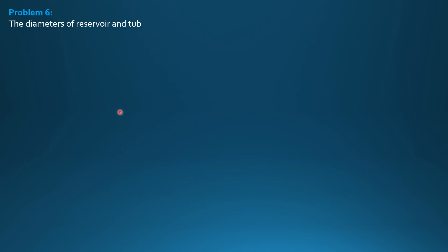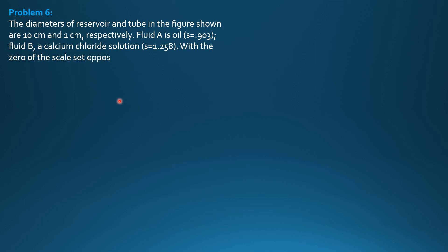Problem 6. The diameters of reservoir and tube in the figure are 10 cm and 1 cm respectively. Fluid A is oil with specific gravity 0.903.